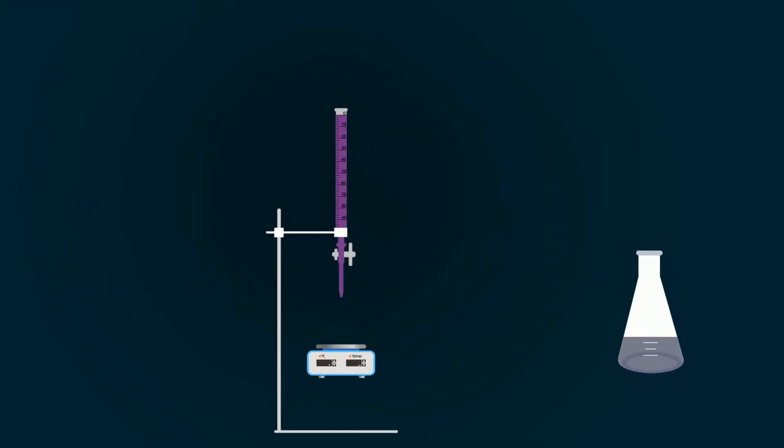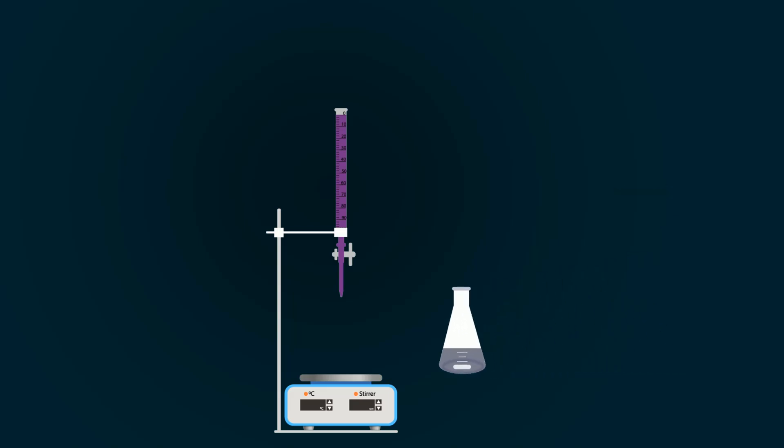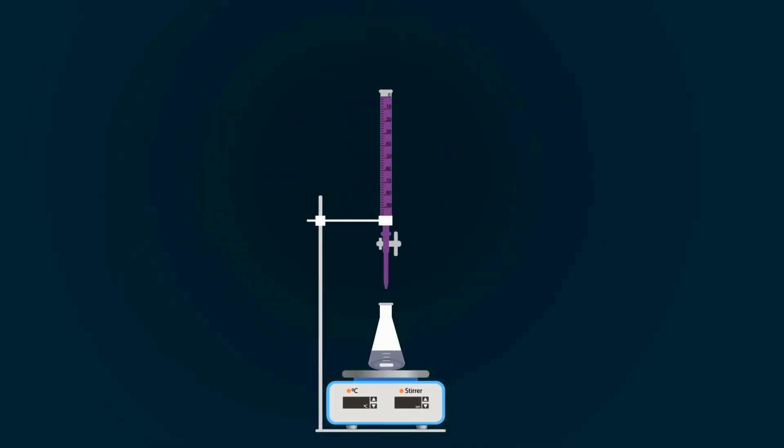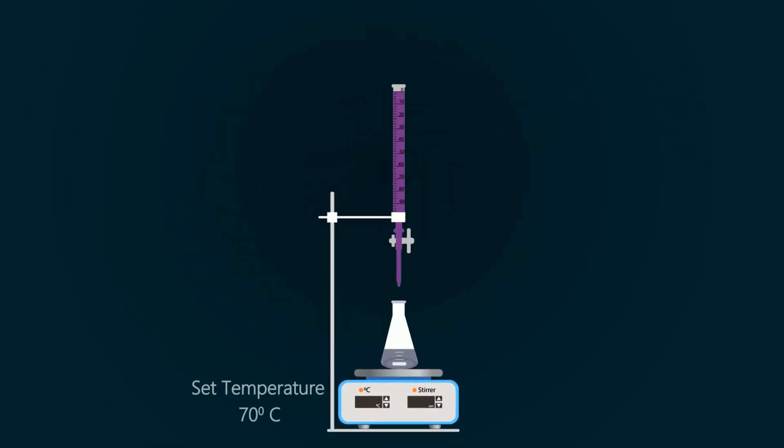Take magnetic stirrer plus heater, put magnetic bar into the conical flask. Put this conical flask onto the magnetic stirrer plus heater. Adjust the temperature to 70 degrees Celsius and set the speed or RPM up to your requirement.